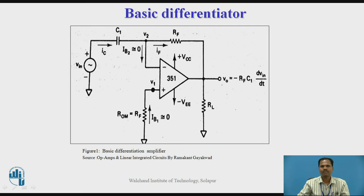IB1 and IB2, the input bias currents, are approximately zero, flowing through the inverting and non-inverting inputs of the operational amplifier. ROM is an offset minimizing resistor connected to the non-inverting input; its value is approximately equal to the feedback resistor RF. The output is taken across load resistor RL, that is, across feedback resistor RF. Since the non-inverting input is connected to ground through the offset minimizing resistor, voltage V1 equals zero volts. By the concept of virtual ground, voltage at the inverting input V2 is also zero volts, so the inverting input acts as a virtual ground.